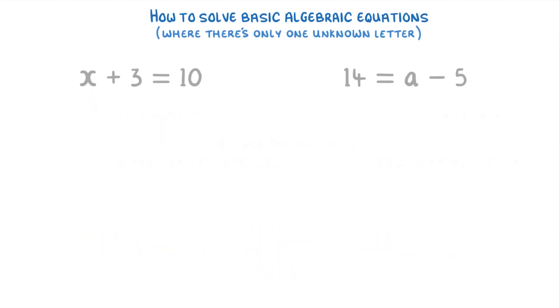So for this first equation, in order to get the X by itself, we need to get rid of this three. At the moment the three is being added to our X, so if we want to get rid of it we're gonna have to do the opposite and subtract three. However, if we subtract three from the left hand side, then we're also gonna have to subtract three from the right hand side, because remember we always have to do the same thing to both sides. It's completely up to you how you want to show this, but one of the most common ways, and the way that I think is probably easiest, is to put a little arrow on either side of the equation.